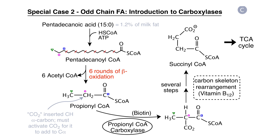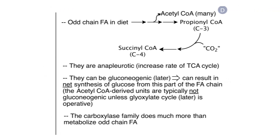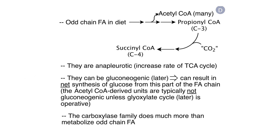The otherwise useless C3 molecule, propionyl coenzyme A, is converted to something of value. Lastly, let's turn to panel D. There are many sources of propionyl coenzyme A, not just from odd-chain fatty acids in the diet. The introduction of succinate into the TCA cycle results in an increase in the amount of carbon going through the TCA cycle — this is truly an anaplerotic reaction that we can use to increase the overall rate of carbon metabolism in the TCA cycle.